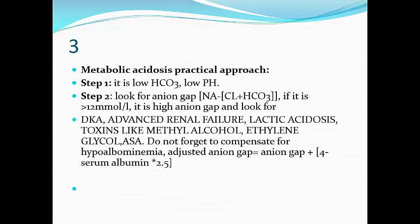Metabolic acidosis step-by-step practical approach: it is low bicarbonate and low pH. The second step — when you face an ABG with metabolic acidosis, please go to the anion gap. Anion gap equals sodium minus the sum of chloride plus bicarbonate. If it is more than 12 mmol/L, or high according to your lab, look for the causes of high anion gap metabolic acidosis.